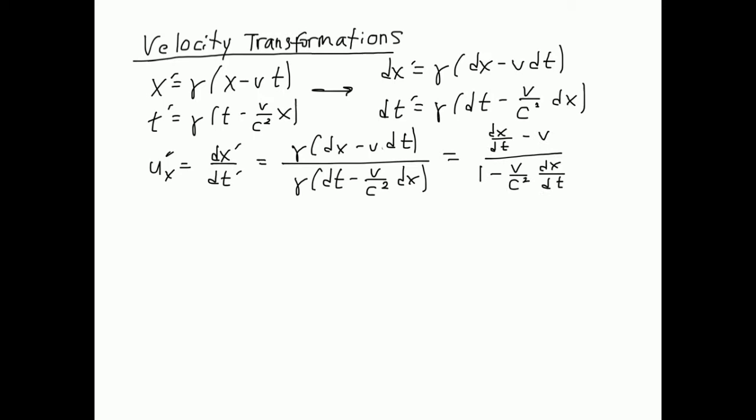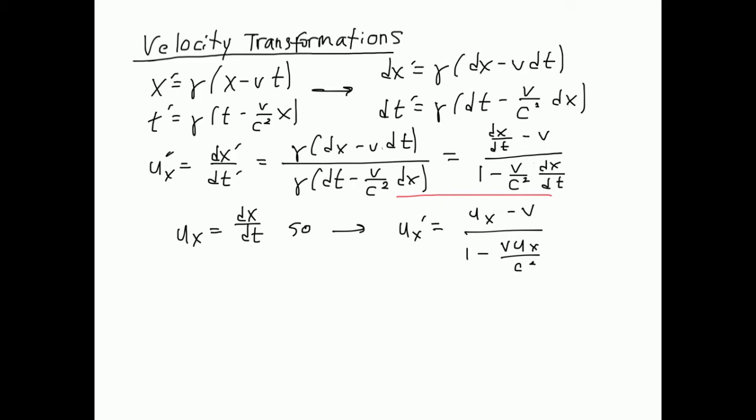This is just algebraic manipulation. We take dx prime equals gamma times (dx minus v dt), and dt prime equals gamma times (dt minus v/c² dx). The definition of velocity is dx prime over dt prime. Plugging those in, we move dt to the top, which cancels this dt and gives us dx over dt — that's the velocity of the object in the original frame. We get our final velocity transformation formula. It starts with the velocity in the first frame, V is the velocity of the moving frame, and this gives you the velocity of the object in the moving frame. This is equation 9.11 in your textbook.